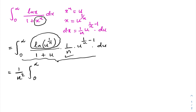Since a definite integral is independent of the variable name, I will rename u back to x. The integral becomes the integral from 0 to infinity of natural log of x over 1 plus x, times x to the 1 over n minus 1, dx.